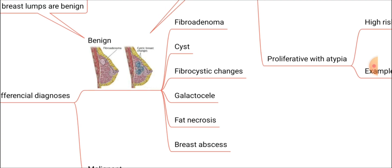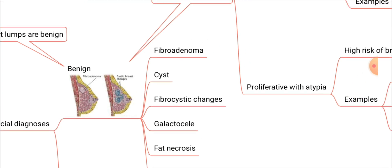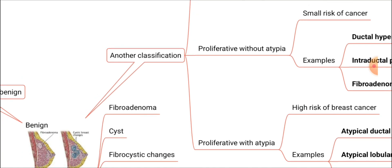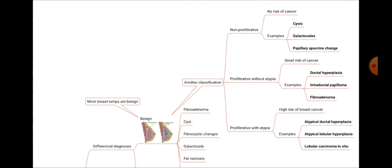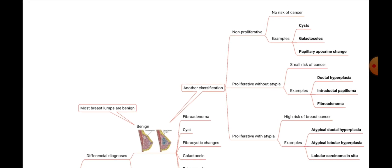We will discuss each of these different types of breast lumps later. There is another classification for benign breast lesions which is better to know to answer MCQ questions. You can divide benign breast lesions into three categories: non-proliferative lesions, proliferative without atypia, and proliferative with atypia.